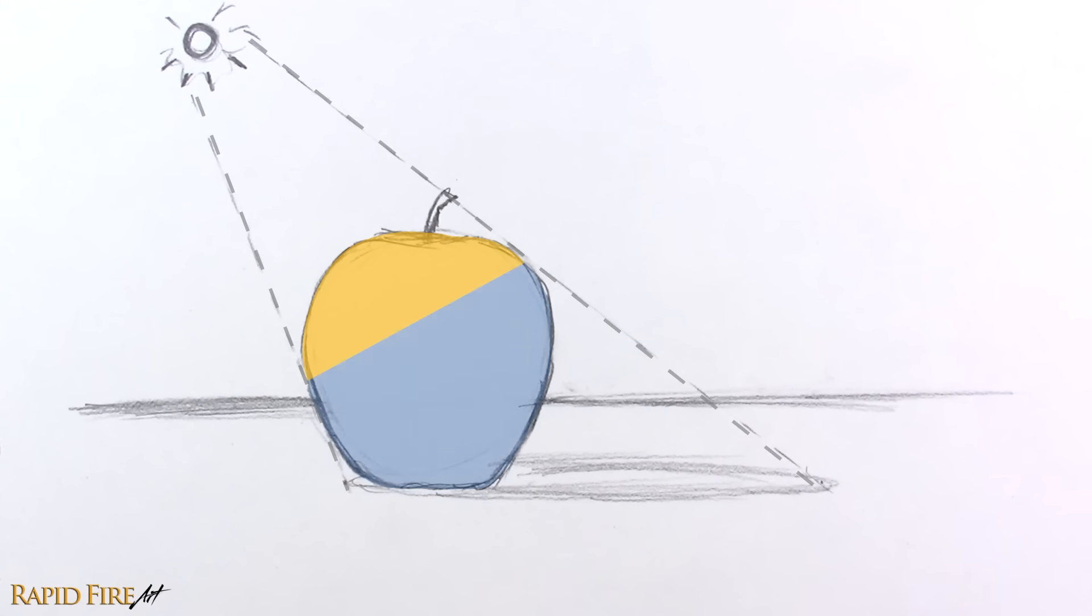Where the dotted lines touch the apple, we have our boundary between the light and shadow side. Let's say the apple is sitting on a white table. How do you think the shadow side will look, taking reflected light into consideration?